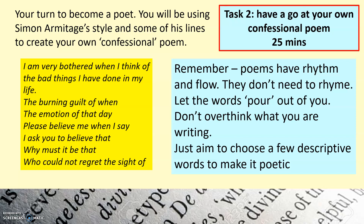On the left-hand side in the yellow box, I've thrown in some sentence starter lines that could work in different places for you to use — those are there to try and help and guide you. On the right-hand side, points I'll read out now. Remember: poems have rhythm and flow; they don't need to rhyme — Simon Armitage has proved that very much. It sounded poetic, and there were maybe hints of those internal rhymes I talked about. Try and let the words pour out of you — if you try too hard to construct something you will find that's a block, whereas if you just let the words pour out first time, you're much more likely to have success. And just aim to choose a few descriptive words, and that will make it poetic — words like he used 'unrivaled' or 'stench', for example. Those sorts of words are quite poetic words, even if they are quite grim.